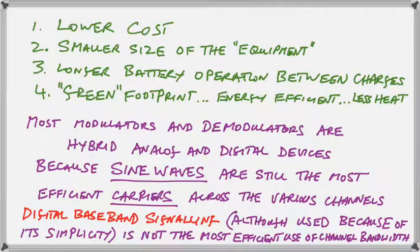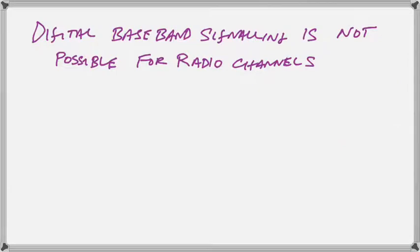We can send so much more information so much quicker. Maximum information as fast as possible is the way the world is going today. So the digital baseband signal is not even possible for radio channels. Whenever it is used, it is used in wires or perhaps in limited fiber optic use. But even the fiber optic channels that bring your internet right into your house do not use digital baseband signaling now. Thank you for tuning in and we'll see you in the next video.